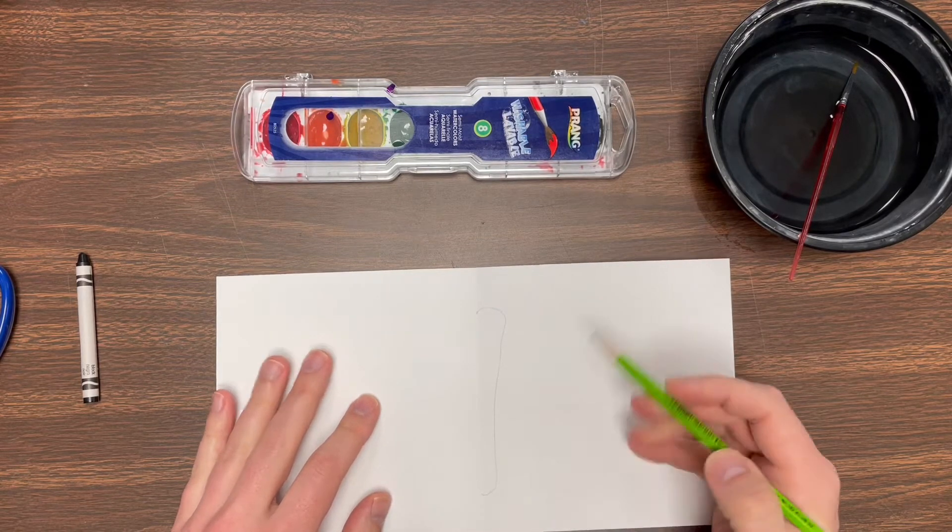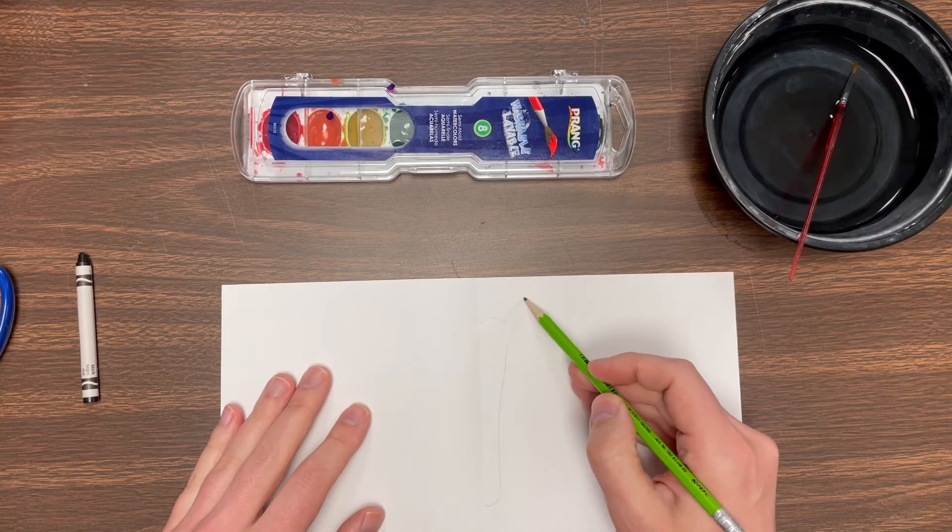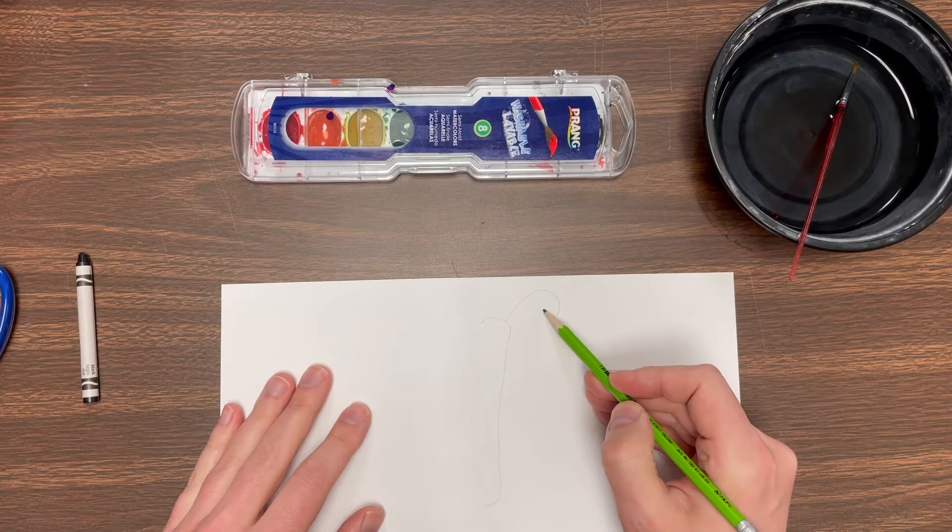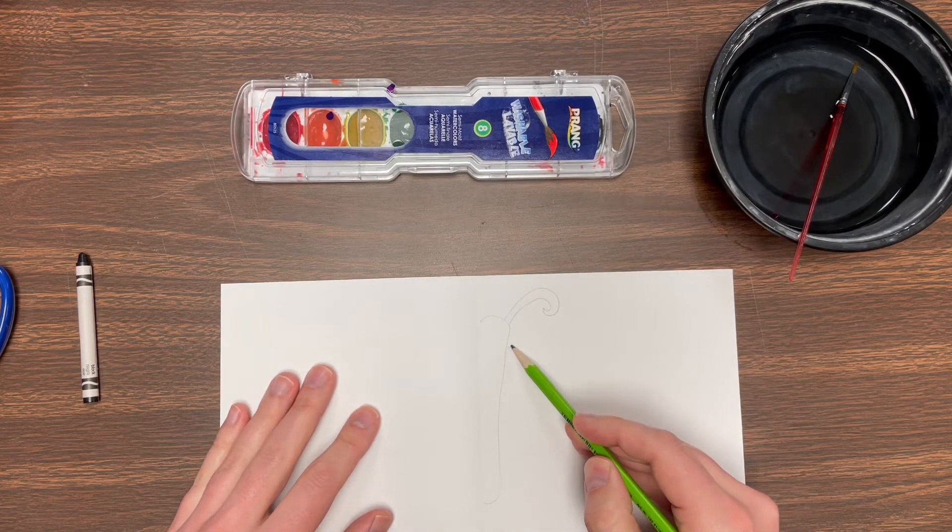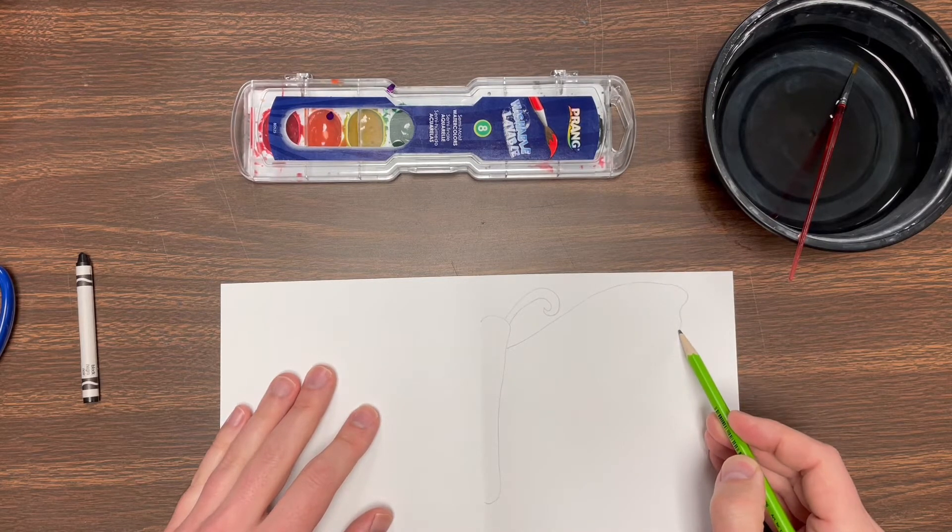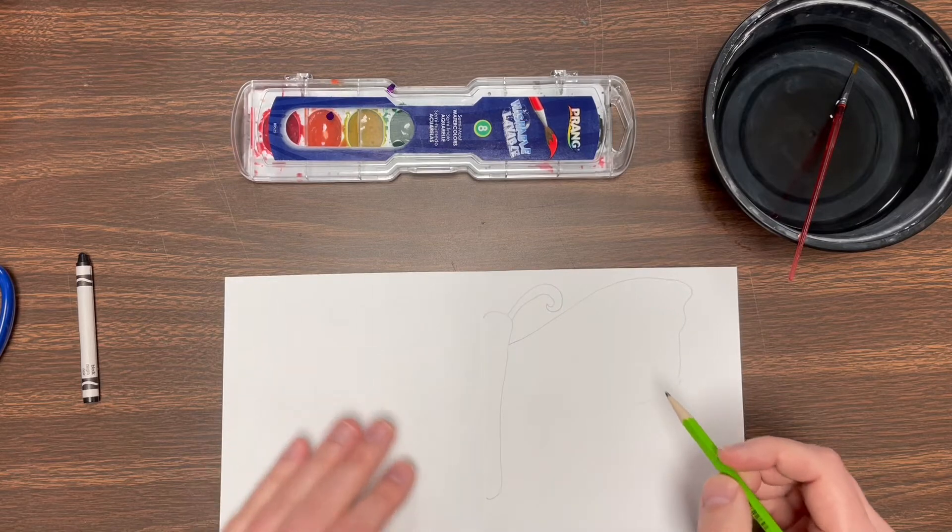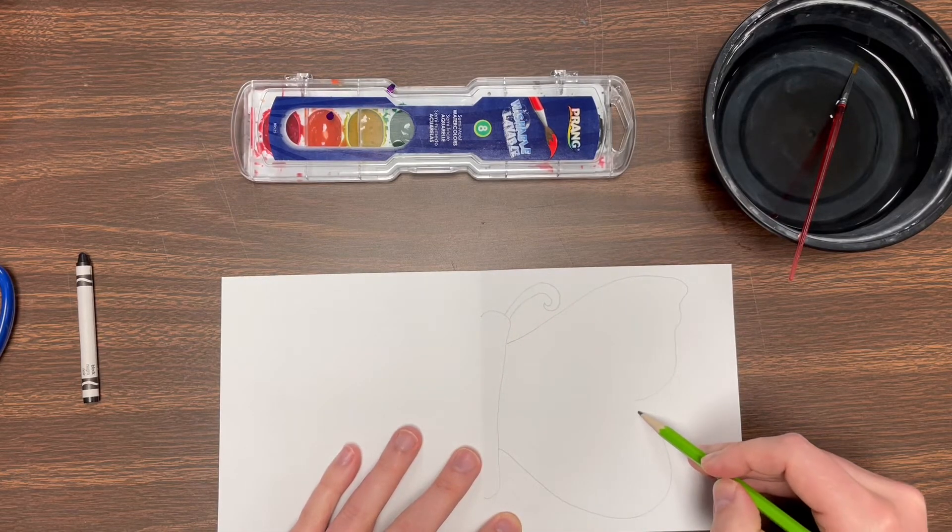They're kind of long shaped like this. I'm gonna give them an antenna. And I'm gonna make a nice big wing. Now the butterfly wing is the really important beautiful thing that you see. So I'm gonna make a nice big wing.